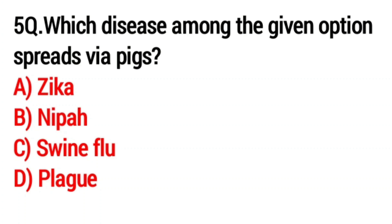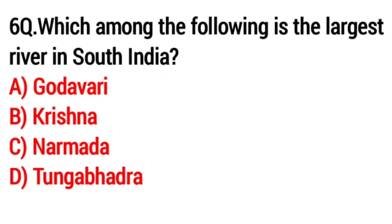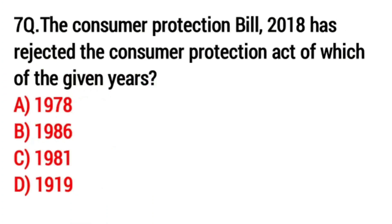Question number five: which disease among the given options spreads via pigs? Answer: C, swine flu. Question number six: which among the following is the largest river in South India? Answer: A, Godavari.